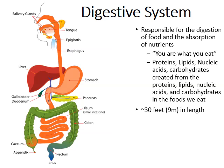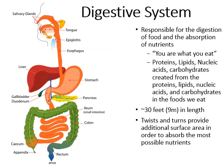Our digestive system is over 30 feet in length if stretched out in one straight line. Notice how in the diagram there are a lot of twists and turns — this is really important to provide additional surface area in order to absorb the most possible nutrients, which will be even more evident when we get into the notes on the small intestine.